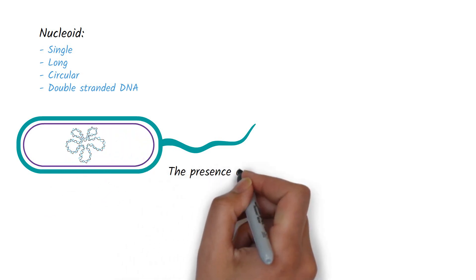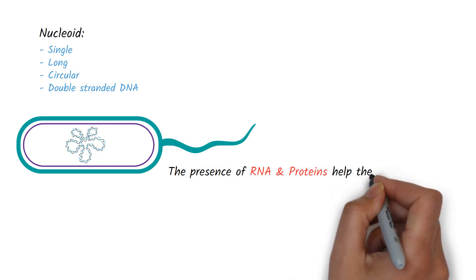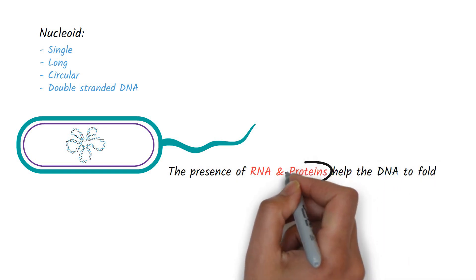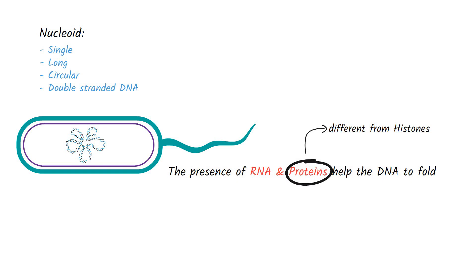The presence of RNA and proteins help the genome to fold inside the cell. However, these proteins are different from histones that are seen in eukaryotic cells.